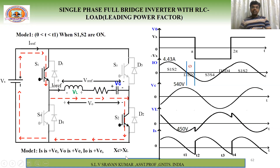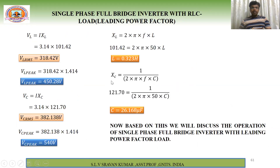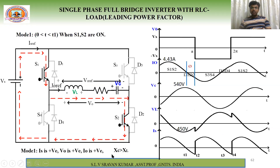The key condition for leading power factor is XC > XL. From our calculations: XC = 121.70 Ω and XL = 101.42 Ω, confirming XC > XL. At the end of Mode 1, the inductor voltage is negative and capacitor voltage is positive.